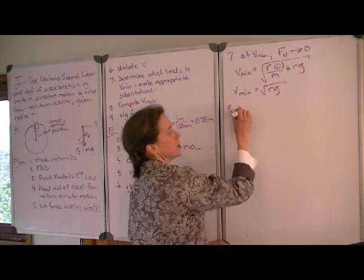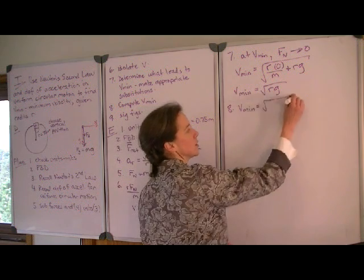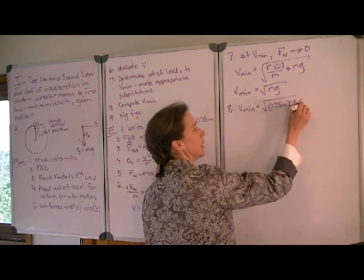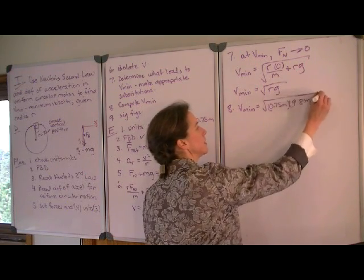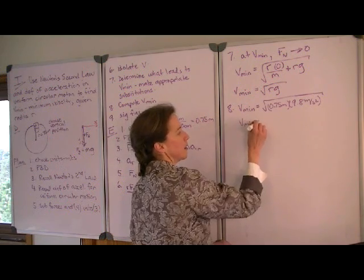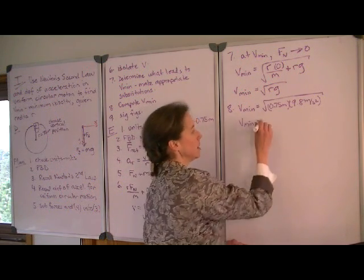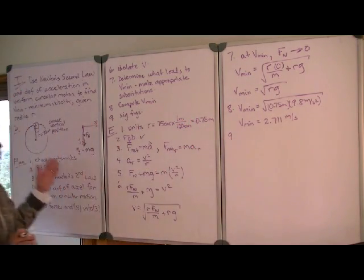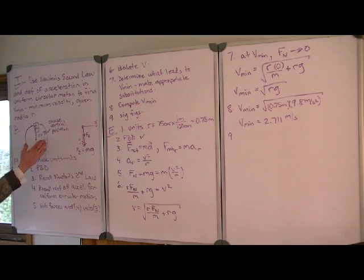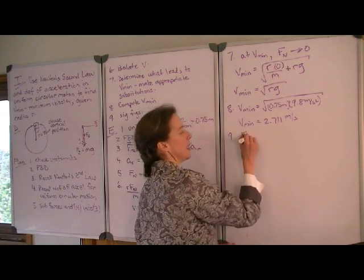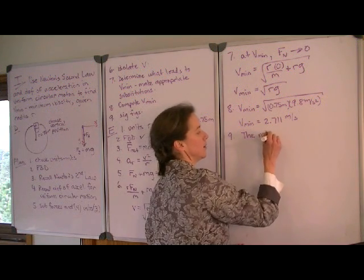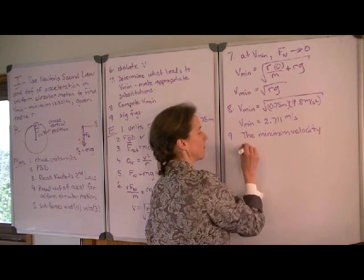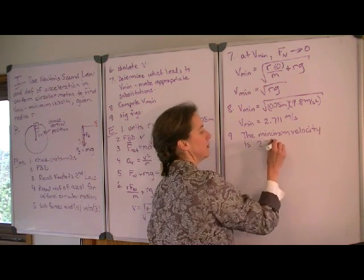Now we can substitute values. V minimum is equal to the square root of 0.75 meters times 9.8 meters per second squared, still under the square root sign. And we find that the minimum velocity is 2.711 meters per second. Checking back with our given value, it has two significant digits. And so we report our answer as the minimum velocity is 2.7 meters per second.